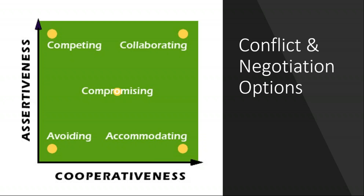That leaves three more on a diagonal. In the bottom left-hand corner is avoiding: low on assertion and low on cooperativeness. If you're avoiding, you're not really engaging in the negotiation or conflict at the time. In these circumstances, you might buy yourself time to come back, let people calm down — or you might just believe it's not worthwhile getting involved. If your scores are relatively high on avoiding, it probably suggests you're doing too much of it and need to get involved earlier.